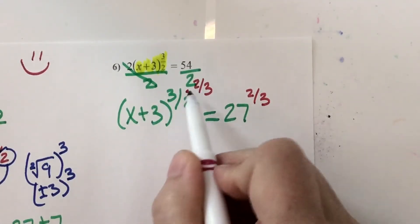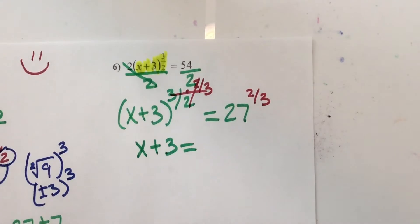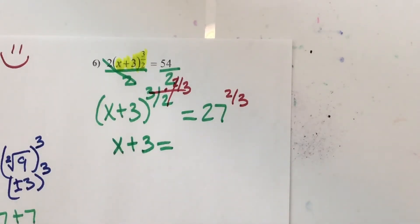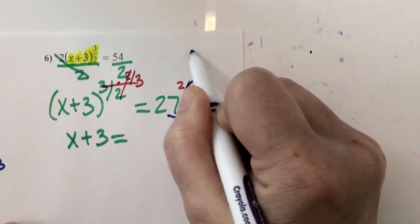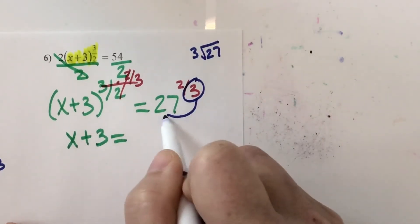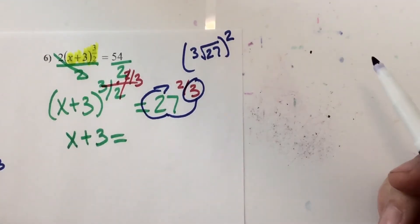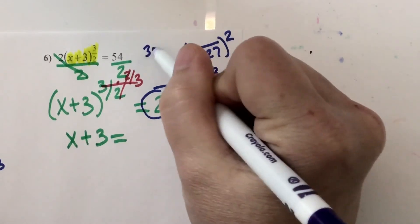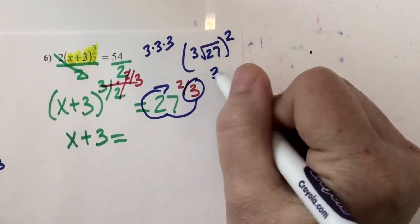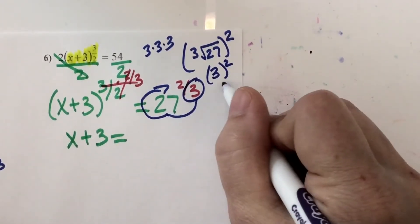The 3 and 2's cancel — all I'm left with is x plus 3. The right side, I need to go around the world. It's telling me to take the cubed root of 27 and raise it to the second power. Am I taking an even root this time? Nope — that's not an even number, so no plus or minus. The cubed root of 27 is 3, because 3 times 3 times 3 makes 27. Then raise that to the second power — 3 squared, 3 times 3, is 9.